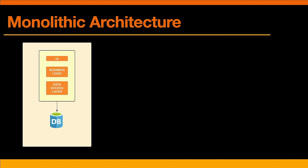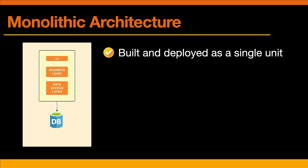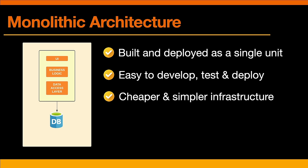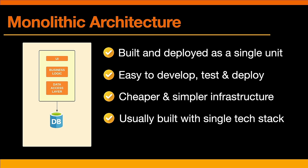Before we look at microservices, I think it's important to understand what monolithic architecture is, which is sort of the original architecture — this is probably what you're used to. It means the entire application is built as one single unit, and all the code is tightly coupled together. This makes it easy to develop, test, and deploy the application. Developers have a clear understanding of the application structure, and making changes is straightforward since everything is in one place. It's also cheaper in most cases because you have a relatively simple infrastructure, and these applications are typically developed and run with a single stack.